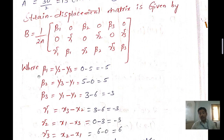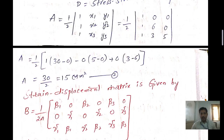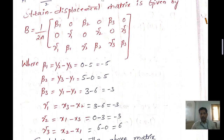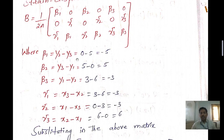Now we compute the beta values: β1 = y2 − y3 = 0 − 5 = −5. β2 = y3 − y1 = 5 − 0 = 5. β3 = y1 − y2 = 0 − 6 = −3. These are obtained by eliminating the corresponding node row from the coordinate matrix.